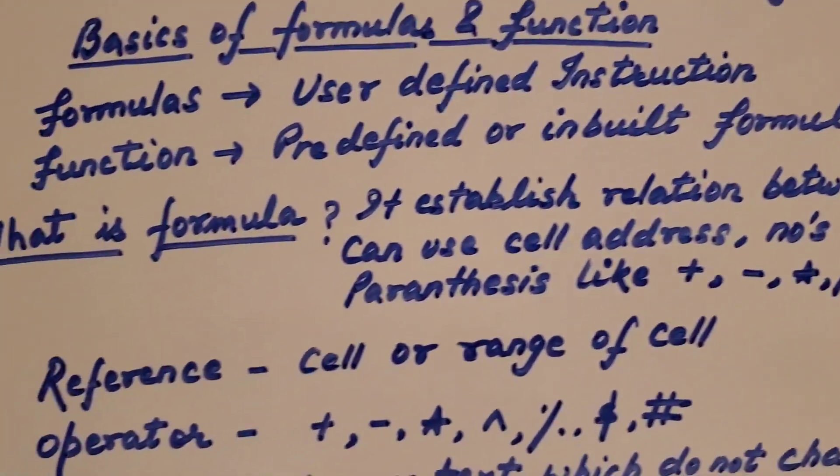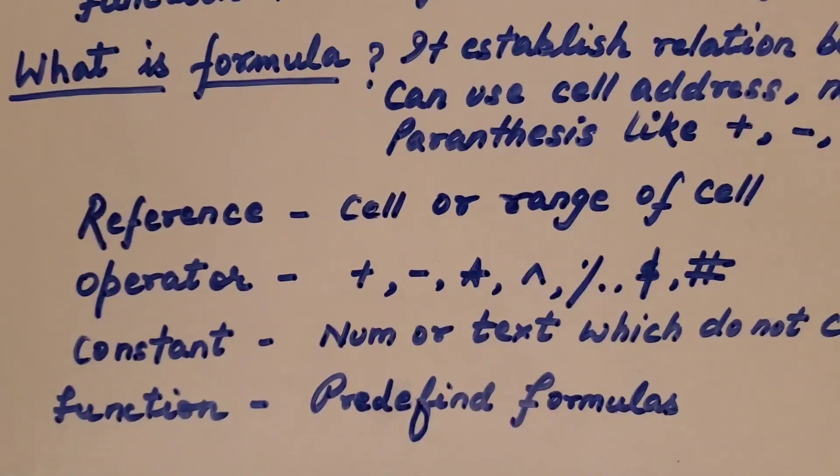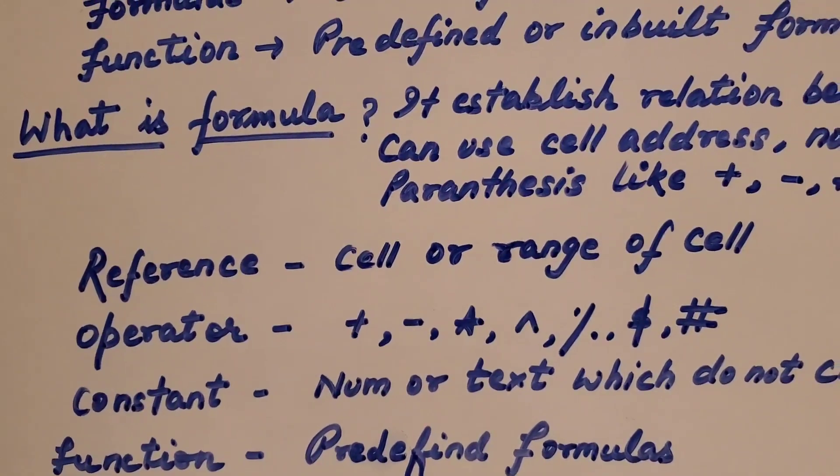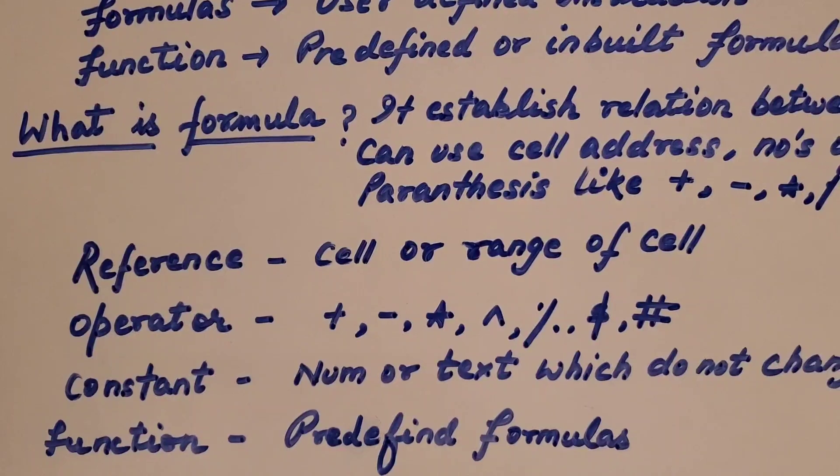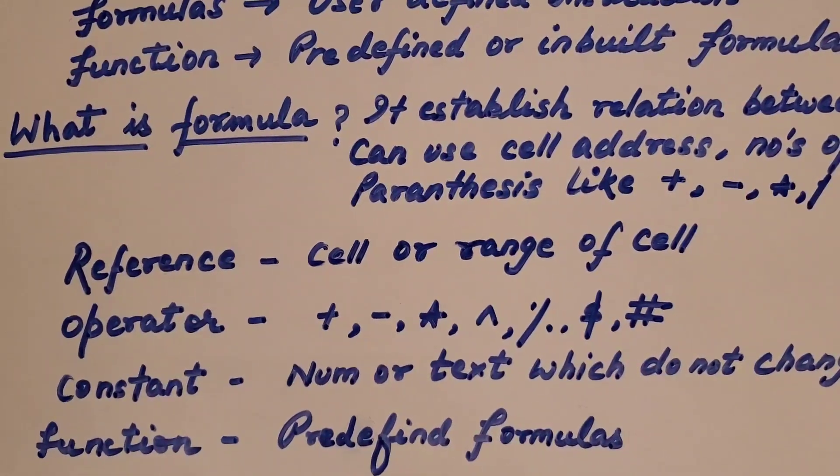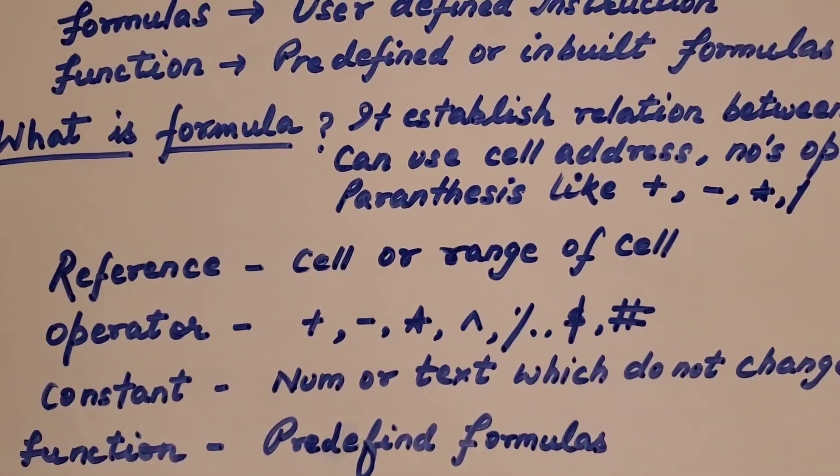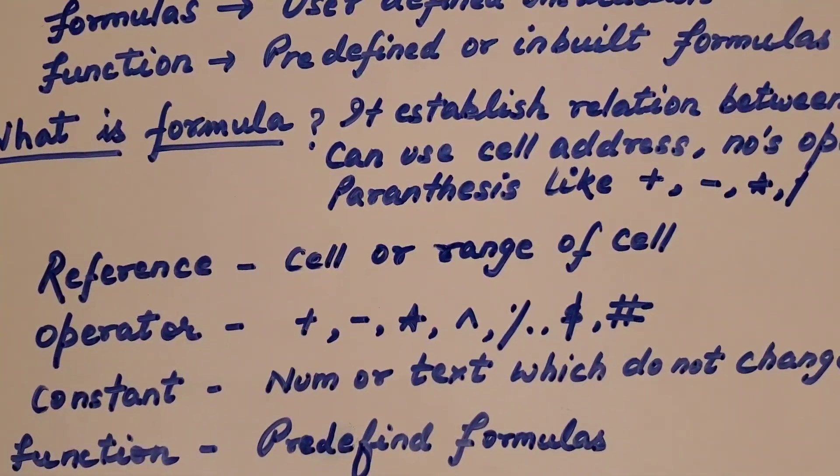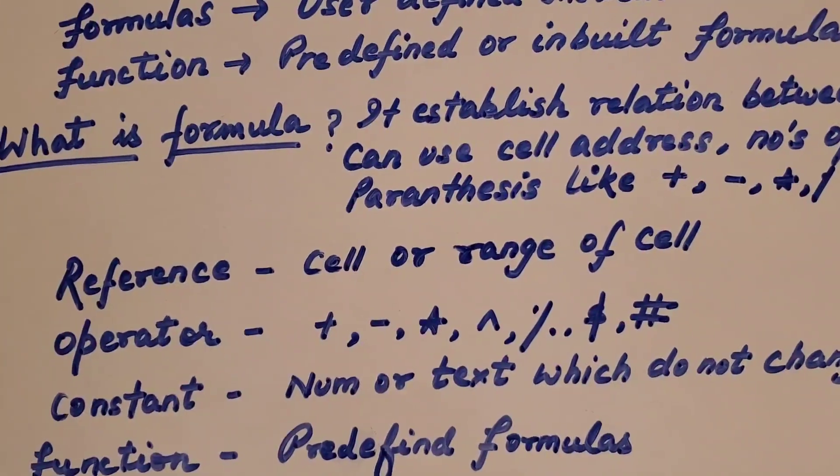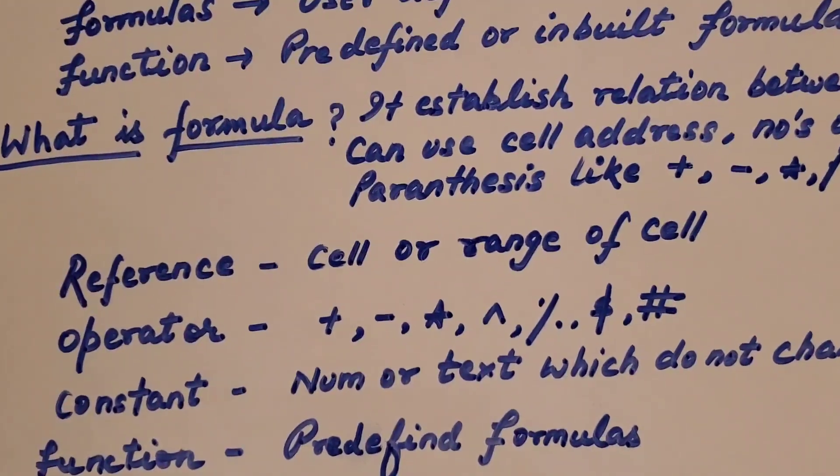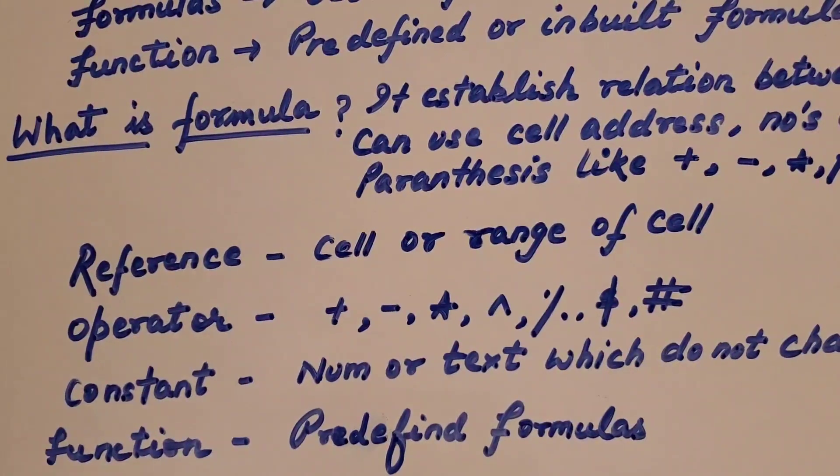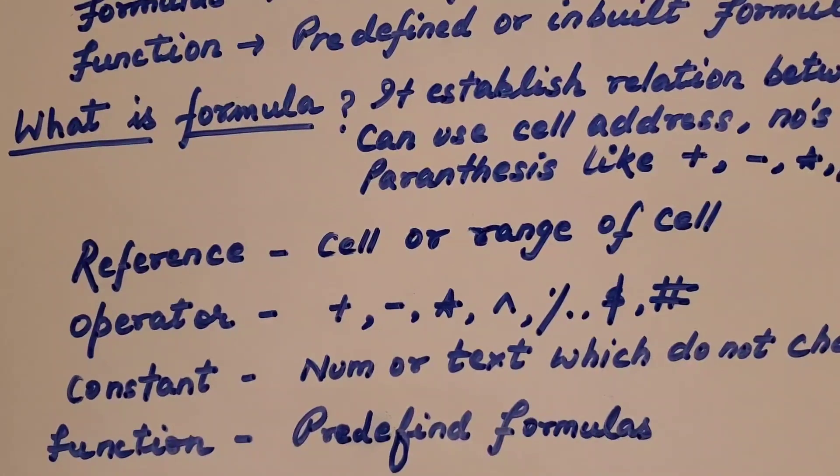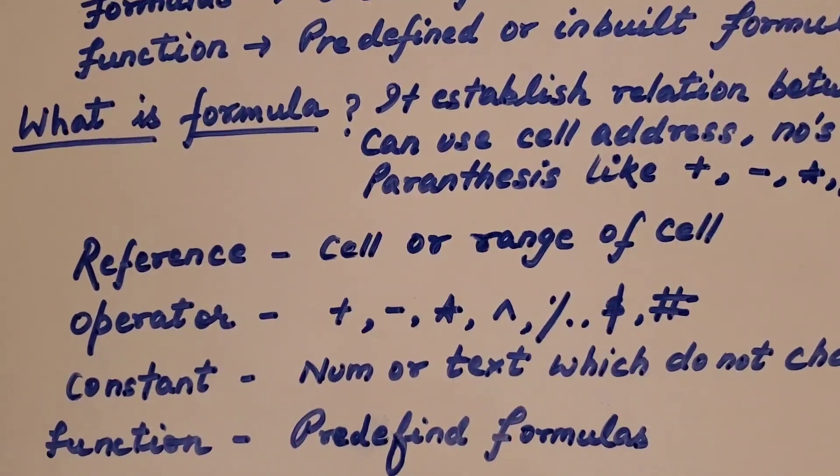Cell address. Before that, we will finish this. Then after I will show you the screen also how it looks. Now, the reference. These four names we will call it in a formula. Cell or range of cell we call it reference. How do I call you? I will call you by your name, right? Your name is your reference. Similarly, when you call a cell or a block where the value is written, we call them cell. For example, I will show you a very simple thing.